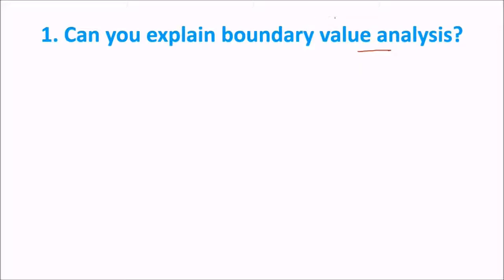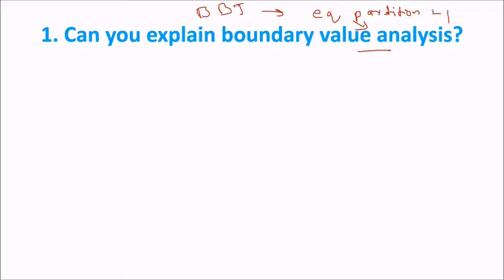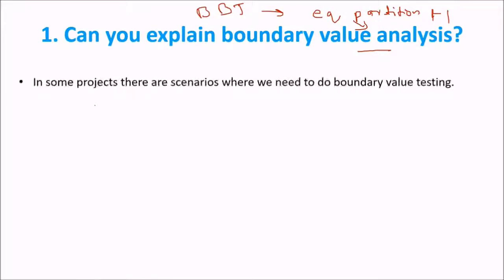In boundary value analysis, in black box testing what we do is first try to find out the equivalence partition, and after finding the equivalence partition we take the values which are at the boundary of the input values. These boundary values are inputted to the code or the module you want to test, and then the boundary value analysis is done.